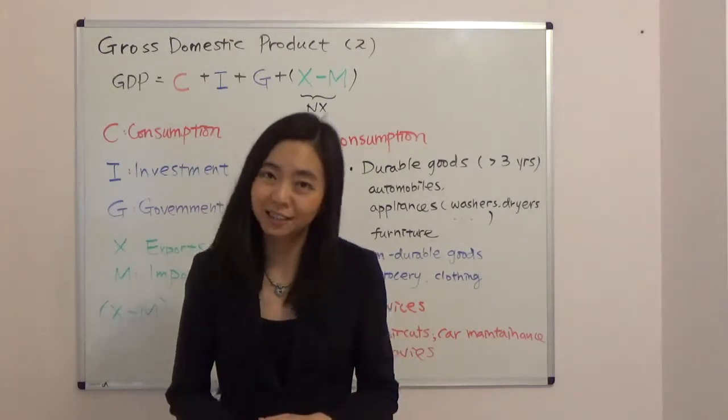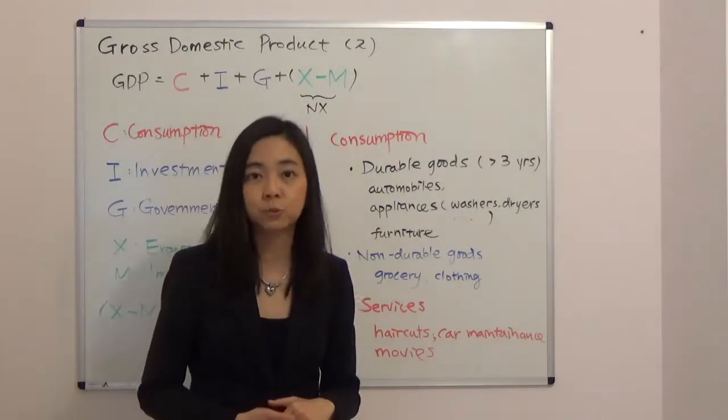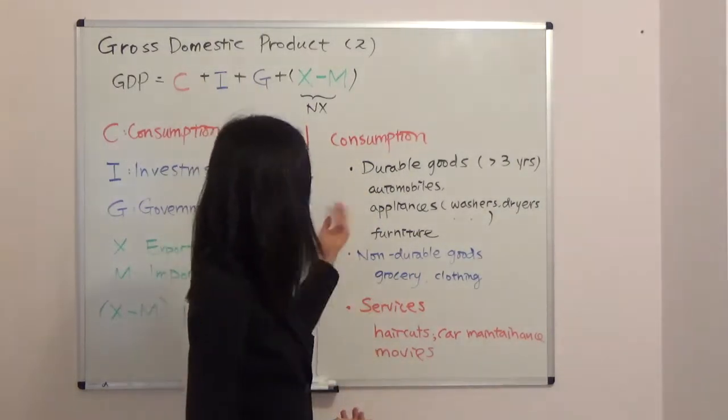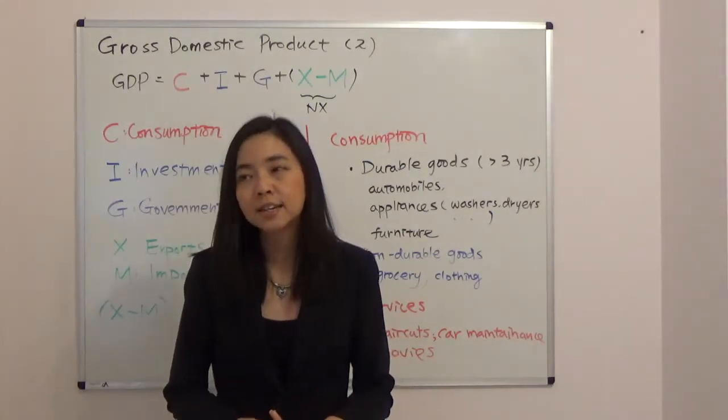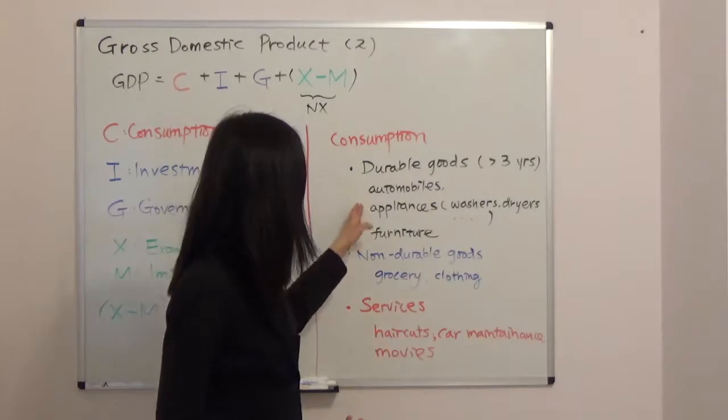Think about furniture you get from IKEA and automobiles—they typically last for more than three years. Also, your appliances like washers, dryers, dishwashers, and stoves. These are things that will last for more than three years; we call them durable goods.